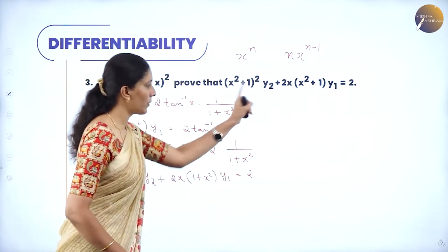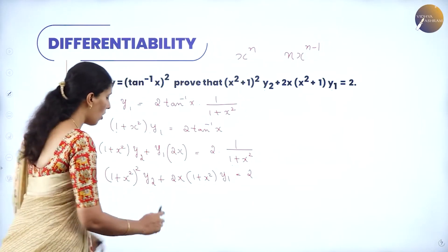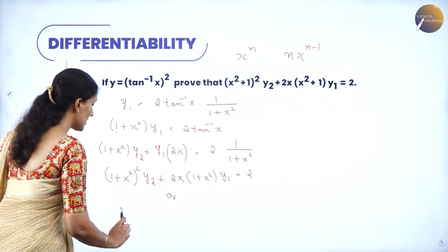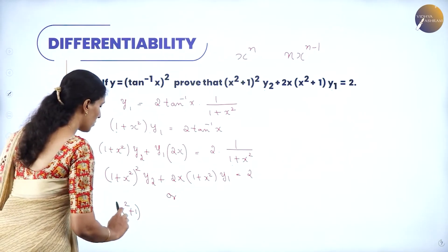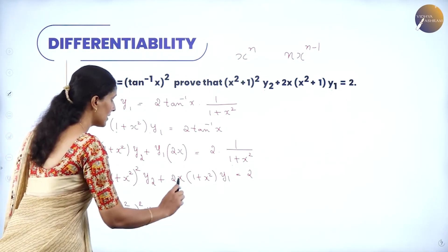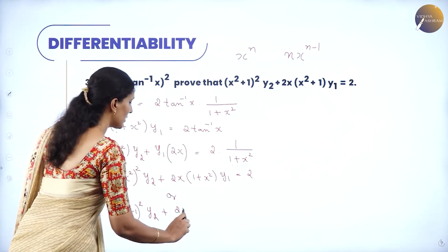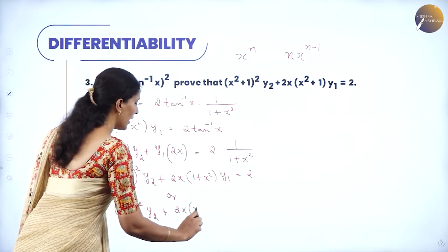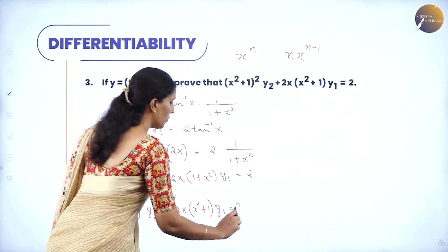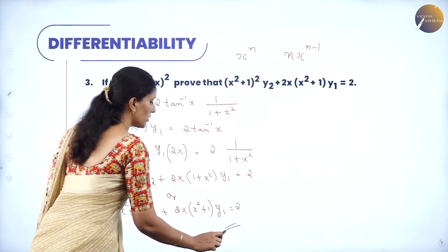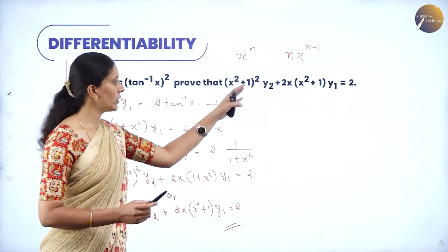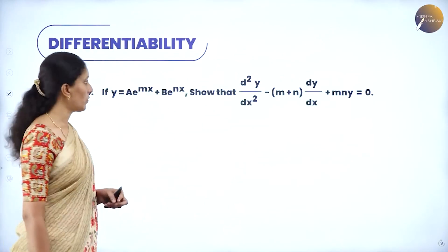We can interchange terms: (x²+1)²y2 + 2x(x²+1)y1 = 2. Hence we have proved the given equation.